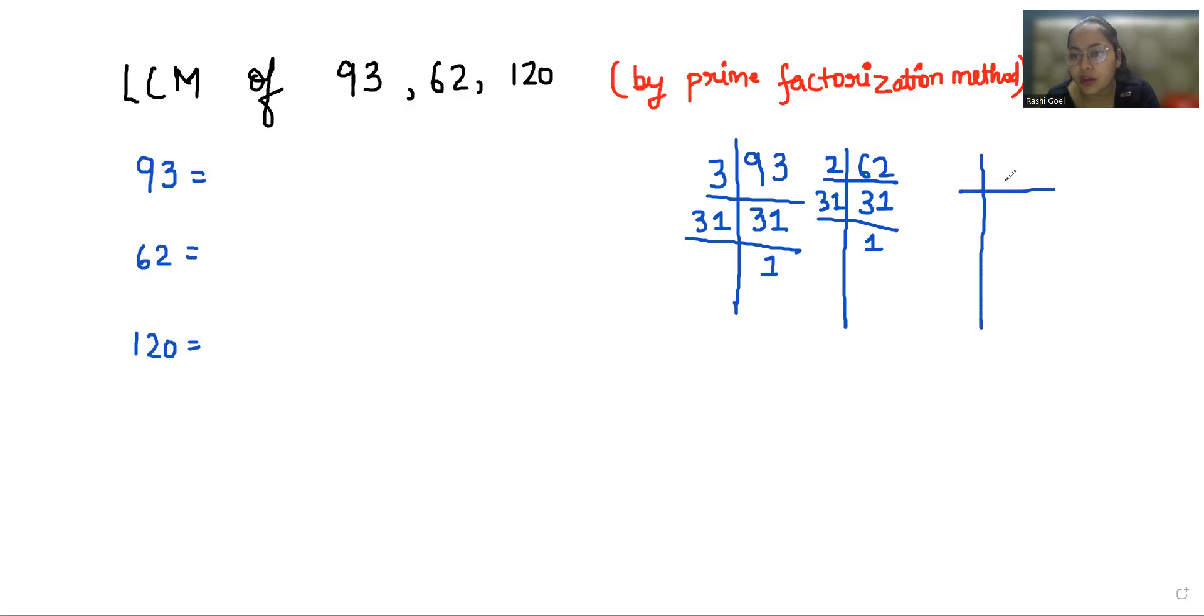Now 120 divided by 2 is 60. Again 60 divided by 2 is 30. 30 divided by 2 is 15. Now we'll start with 3. 5 and 5 is 1.